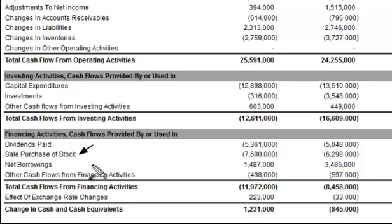So if you're looking at a cash flow statement — which shows cash flowing in or out of the company — and you see a negative number here, that's actually a positive for investors. A negative number means the company has spent cash to go buy back its own shares.